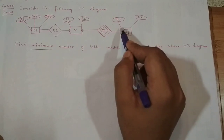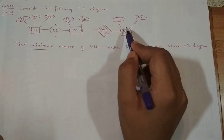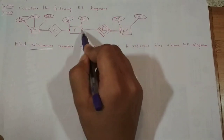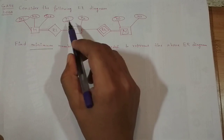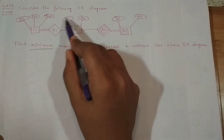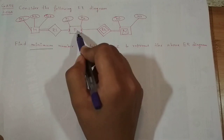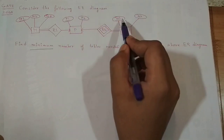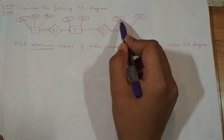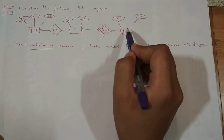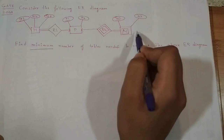This is a weak entity set depending on a strong entity set which is P. Taking the key attribute P1 from the entity set P, if we use the partial key N1 along with it, then we will be able to identify each record of N uniquely.